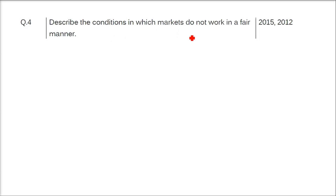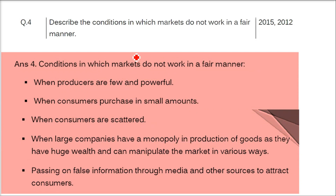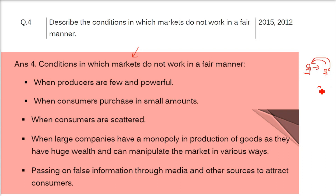Question: Describe the conditions in which markets do not work in a fair manner. First, when producers are few and powerful — only a few producers exist and they are quite powerful, so no one can question them. Second, when consumers purchase in small amounts, the market can be unfair to them. Third, when consumers are scattered — if a consumer has been cheated but consumers don't know each other and are unwilling to come together to fight the wrongdoing, the market remains unfair.